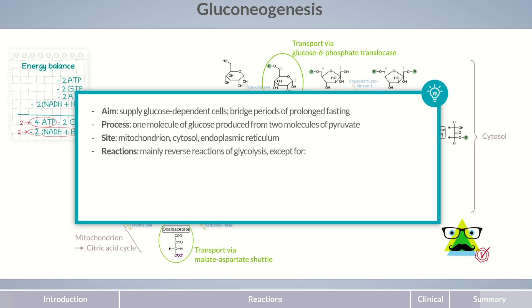Gluconeogenesis reactions are essentially the reverse reactions of glycolysis. Exceptions are the reactions catalyzed by the irreversible key enzymes of glycolysis. Pyruvate is converted to phosphoenolpyruvate by two enzymes specific to gluconeogenesis via the intermediate oxaloacetate.